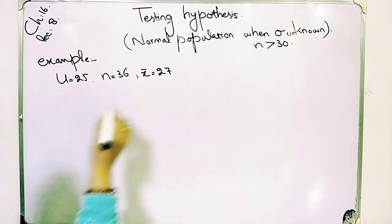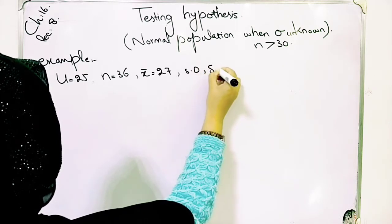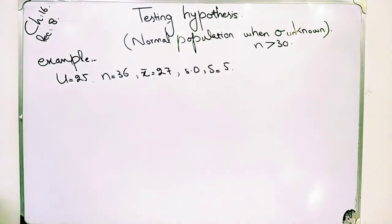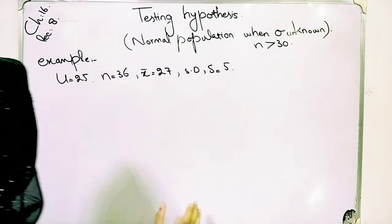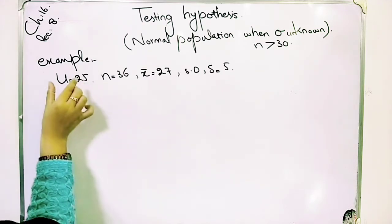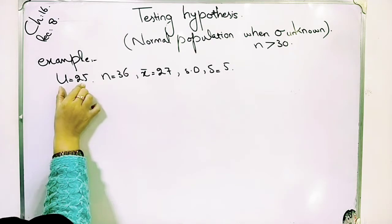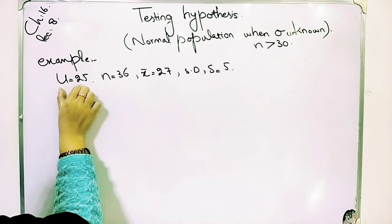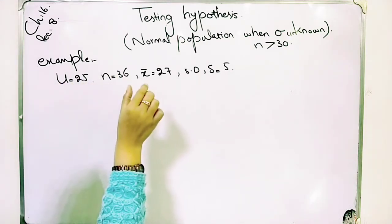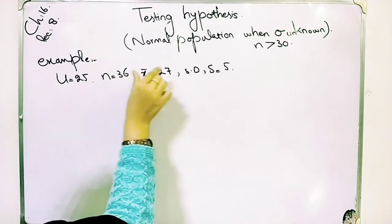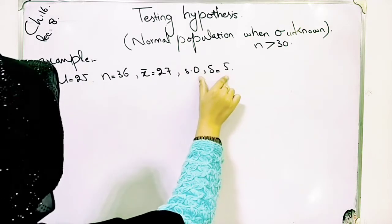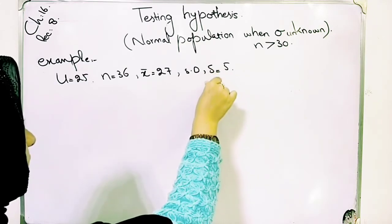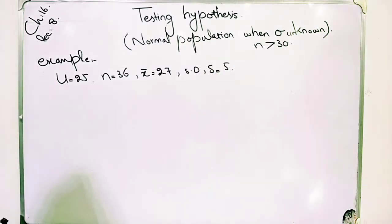The standard deviation s is given as 5. Now we have everything given. They say the population is normally distributed with μ = 25. We note that sigma is not known — the standard deviation given is the sample standard deviation s = 5, not the population sigma. So sigma is unknown.